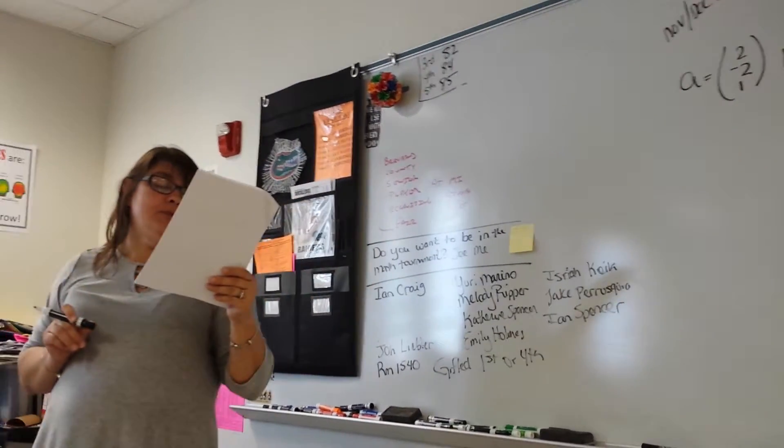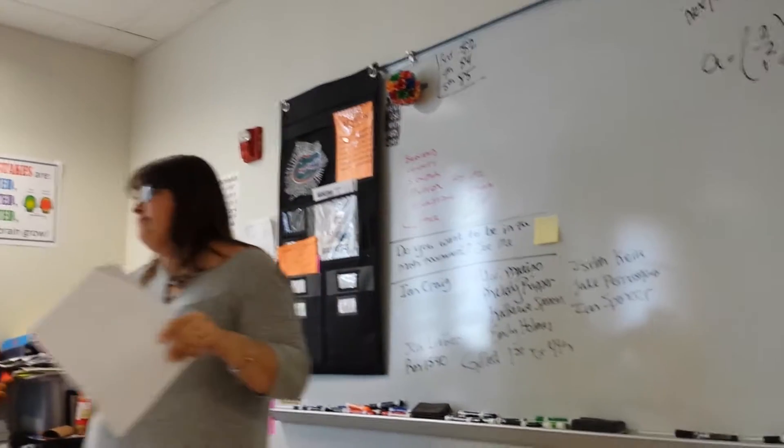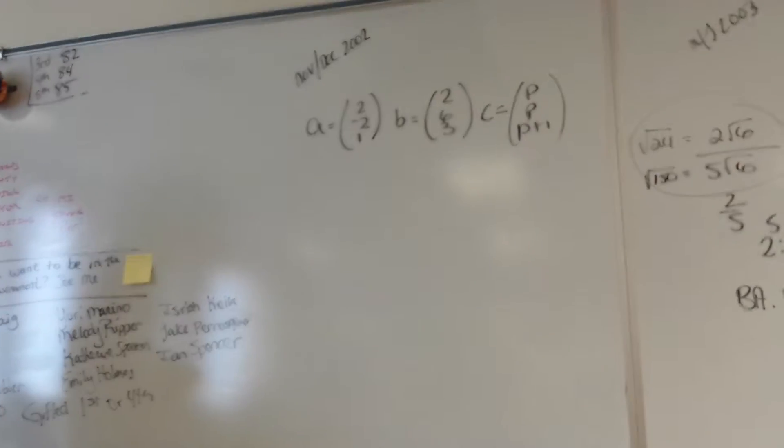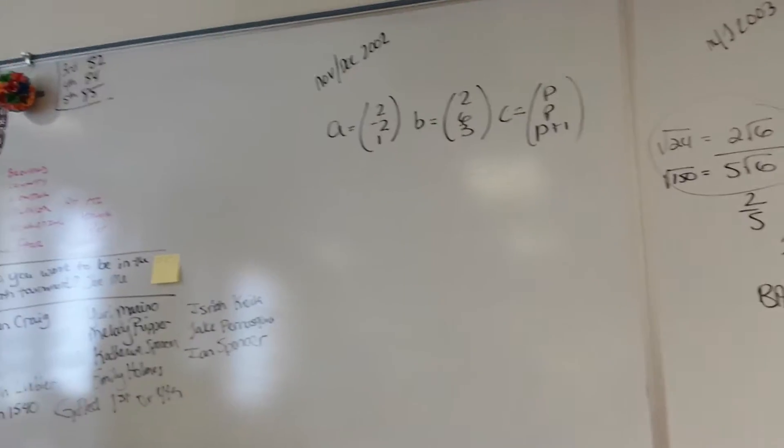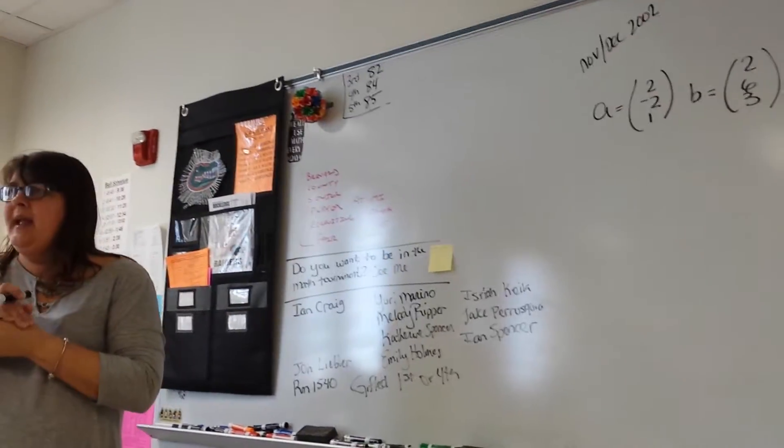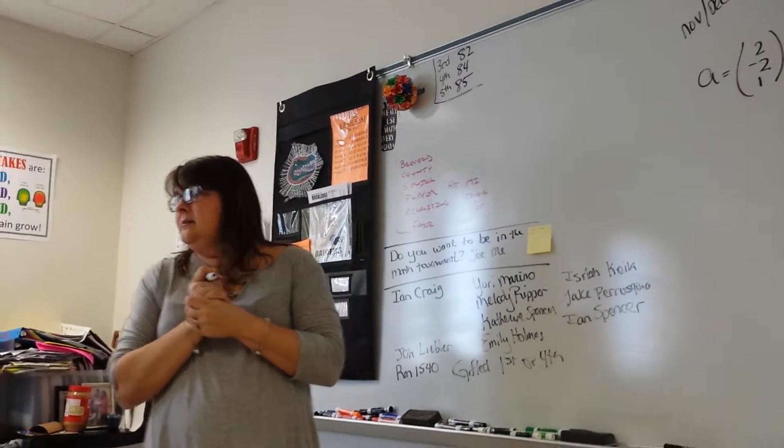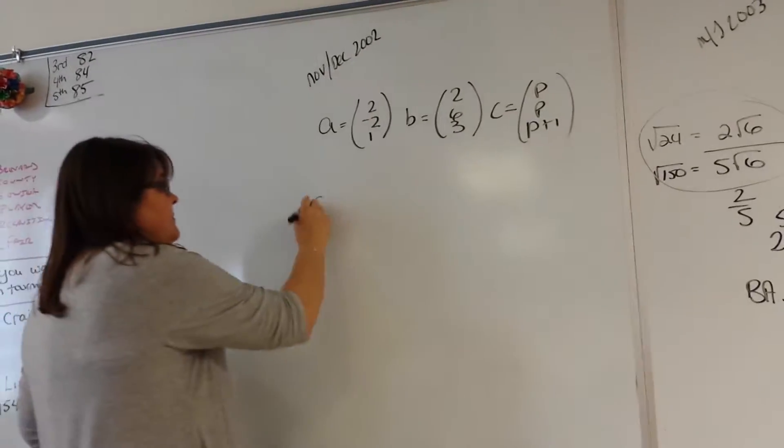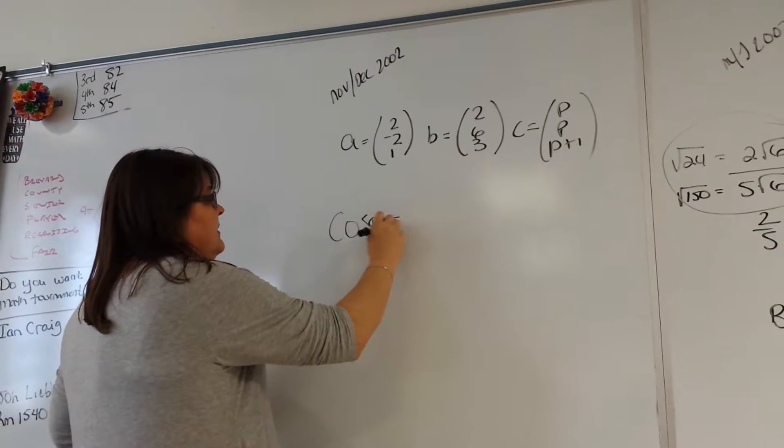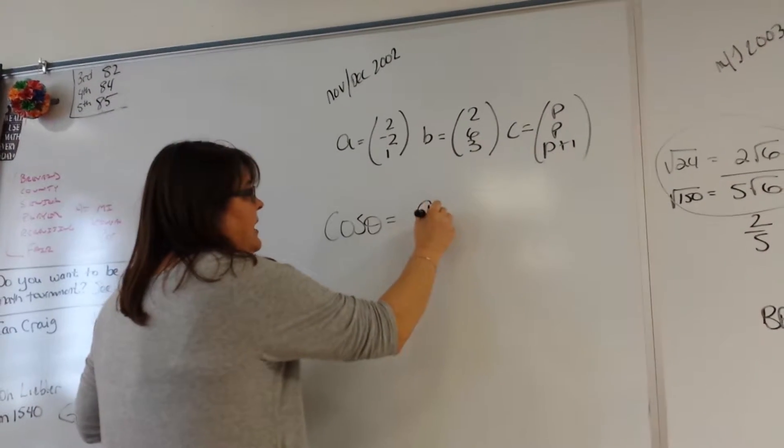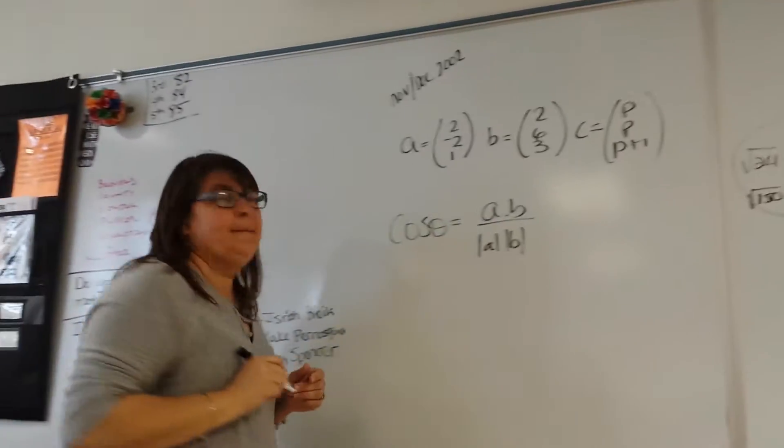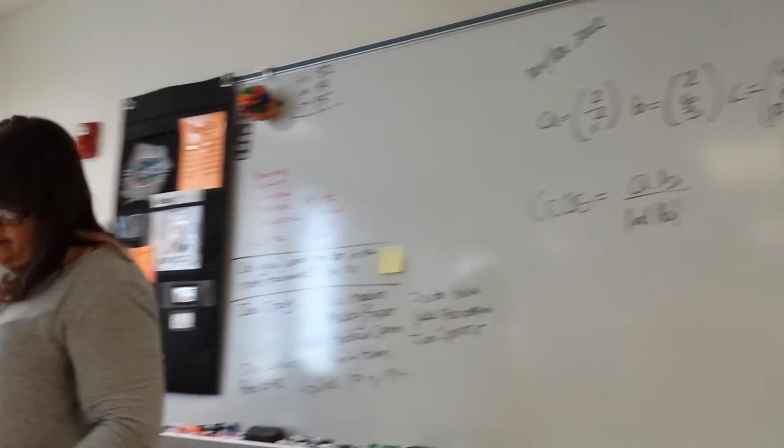Find the angle between the directions of A and B. What does that mean? Well, these are ones that start from 0 and work their way out. So, we're finding the angle between. How do we go about finding the angle between? The dot product. The dot product, right. Good. So, it's cosine theta equals A dot B over the length of A times the length of B.